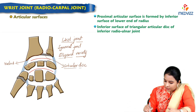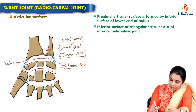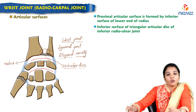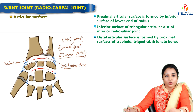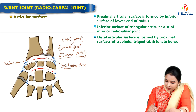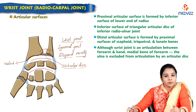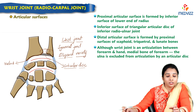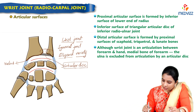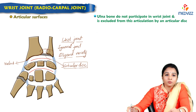The articular disc is also associated with the inferior radio-ulnar joint — the joint between the radius and ulna. The distal articular surface is formed by the proximal surfaces of the scaphoid, lunate, and triquetral. One important thing to note: the wrist joint is an articulation between the forearm and the hand. The medial bone of the forearm, that is the ulna, is excluded from the articulation by this articular disc. So the ulna does not participate in the wrist joint.